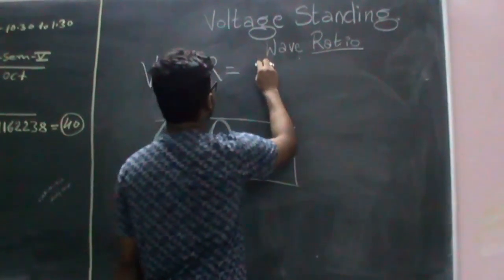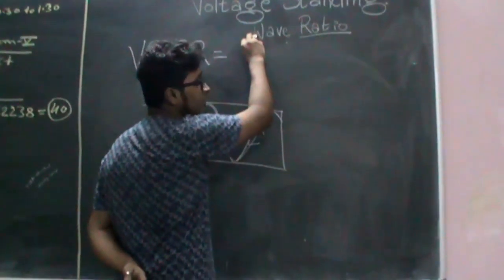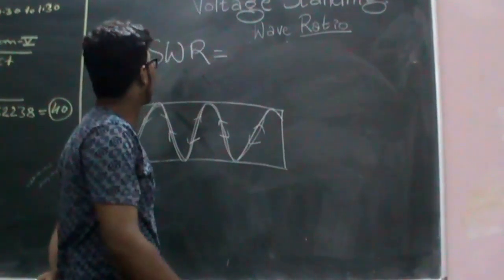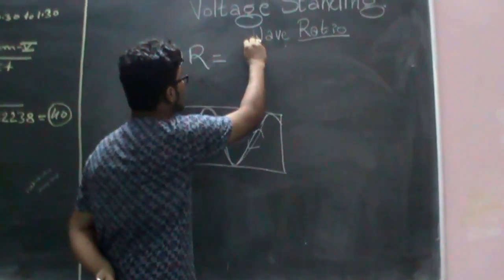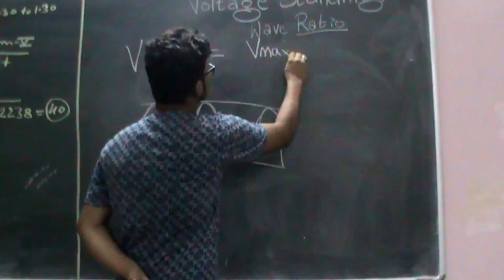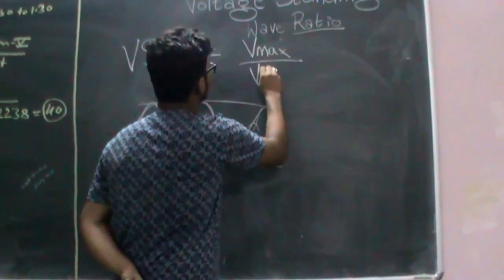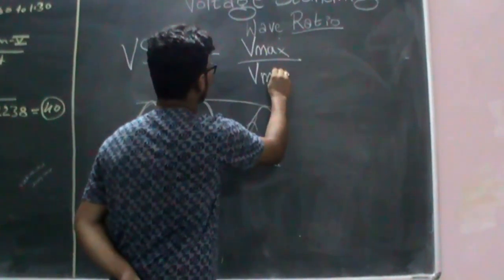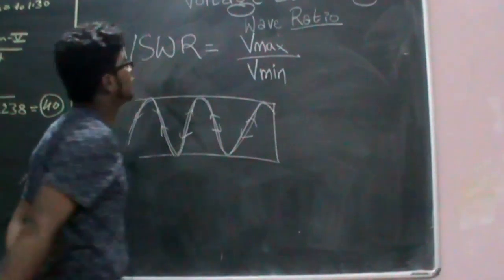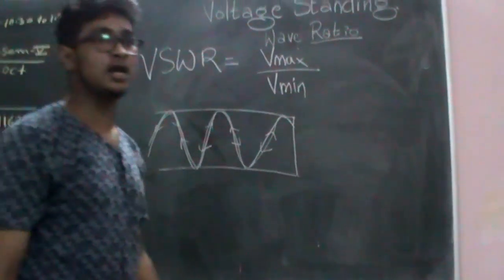In a mathematical formula, VSWR, we can describe it as the ratio of maximum voltage to the ratio of minimum voltage in a transmission line.